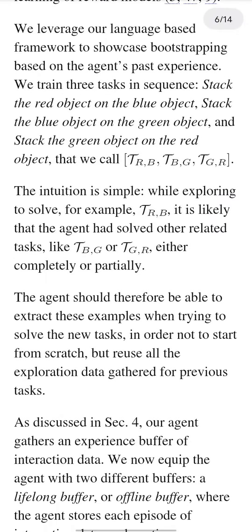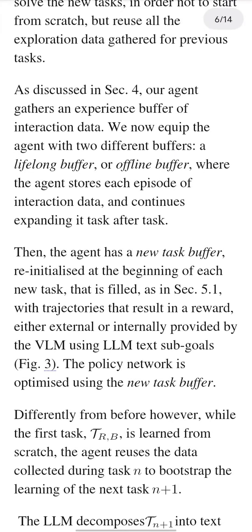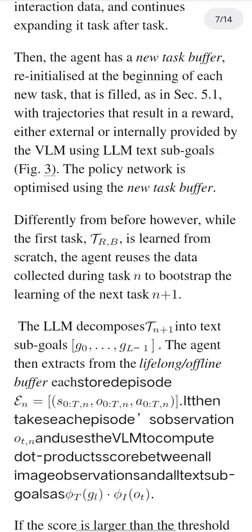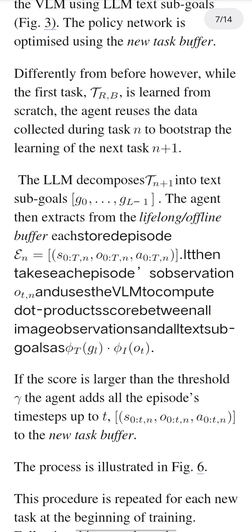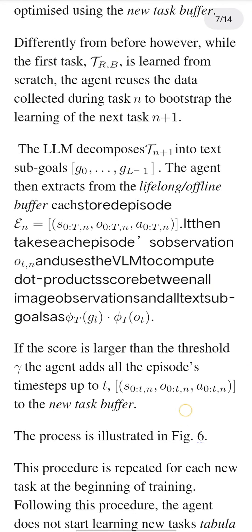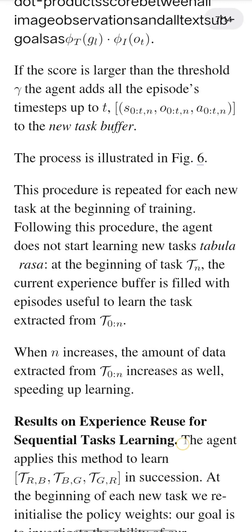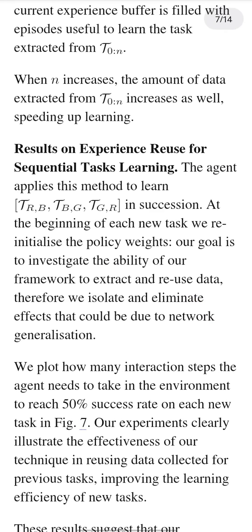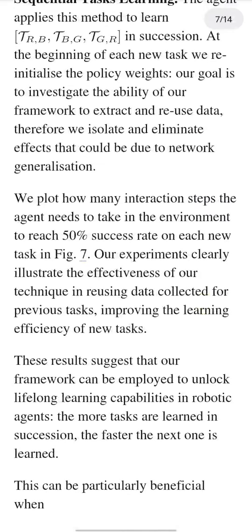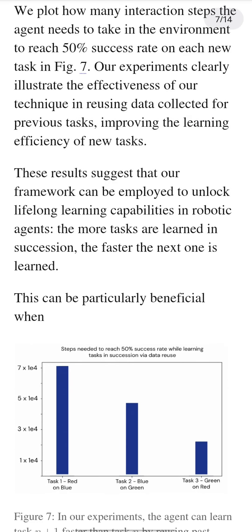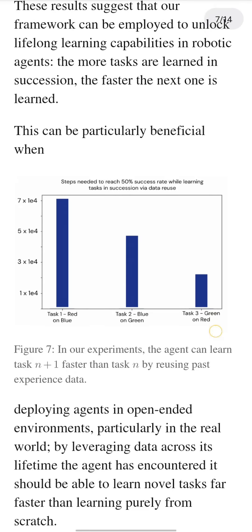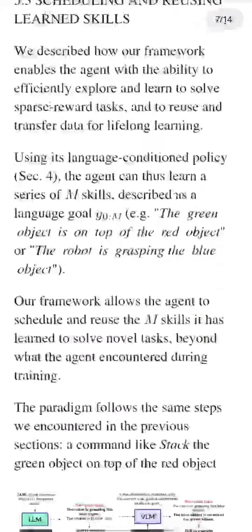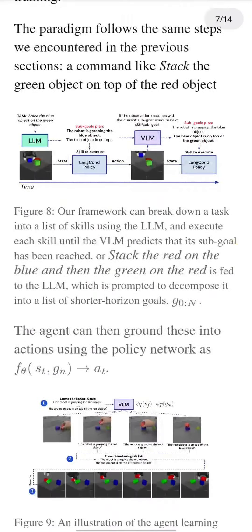The observation learning module enables the RL agent to learn from observing other agents or humans performing a task. The authors propose a method that uses a VLM to map visual inputs to a language representation, which can be used to train the RL agent through imitation learning. They show that this approach can improve the agent's performance and reduce the amount of trial and error exploration needed to learn a new task.